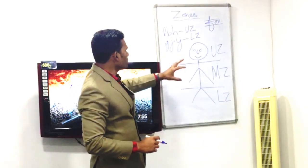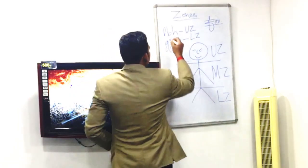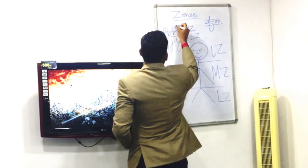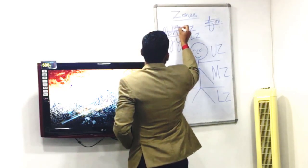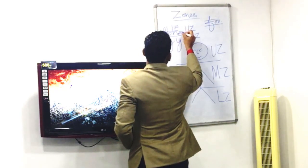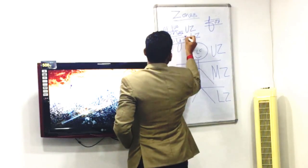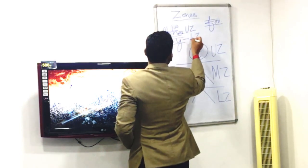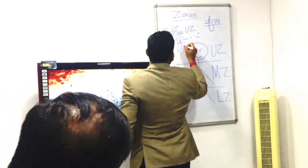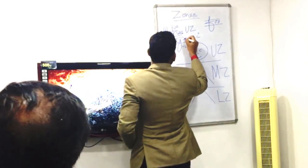L, B, and H have upper zone and middle zone. G, J, and Y have lower zone and middle zone. So some letters have upper zone, some letters have lower zone, but every letter has a middle zone.